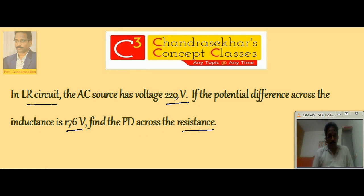Here AC source applied voltage is 220 but inductance across it is 176, and we need to find the value across the resistance. So applied voltage, if I call it as E, is equal to square root of E_R squared plus E_L squared. Across the resistance it is E_R, across the inductance it is E_L.